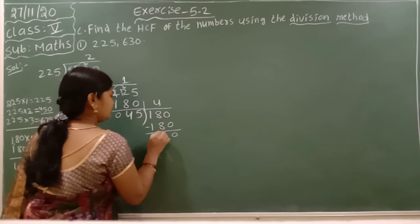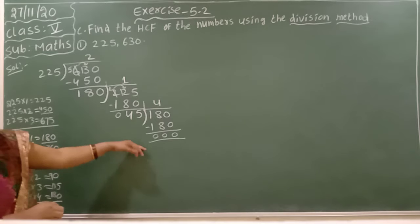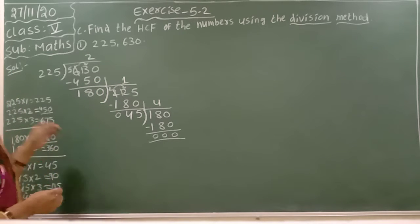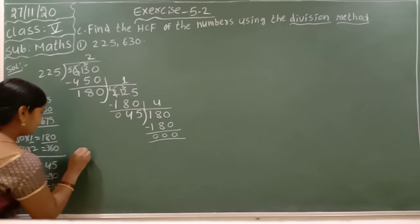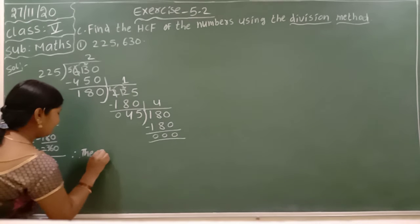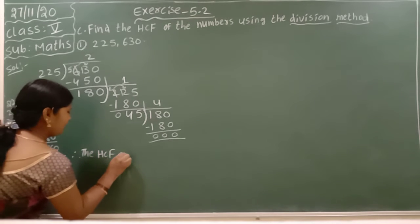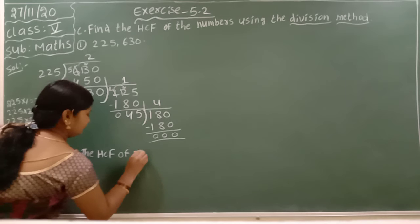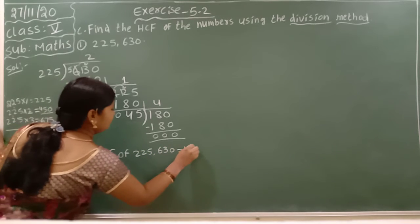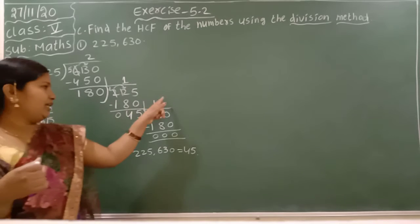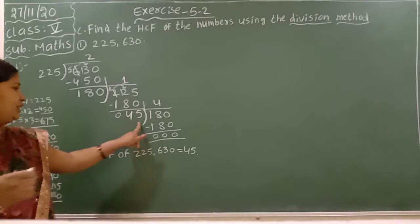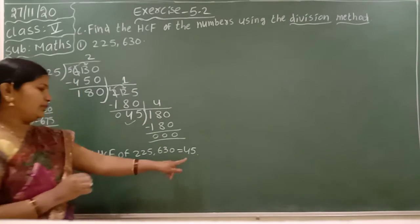We take 45 times 4 which is 180. Minus: 0, 0, 0, 0. Until you are getting 0, you have to do this division continuously. Therefore, this division is known as HCF. The HCF of 225 comma 630 is equal to 45. In division we take quotient as an answer, but in this HCF we have to take this 45 as an answer.